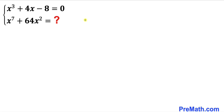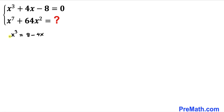The very first thing we are going to do is manipulate this first equation. I'm going to move these two terms to the right hand side, so we end up with x³ = 8 - 4x. Now let's go ahead and take a square on both sides of this equation.